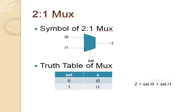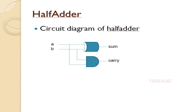Now we can see the half adder. This is the diagram of the half adder. To calculate the sum, A XOR B will give you the sum; A AND B will give you the carry. So instead of using an XOR gate and an AND gate, we need to use 2:1 muxes.